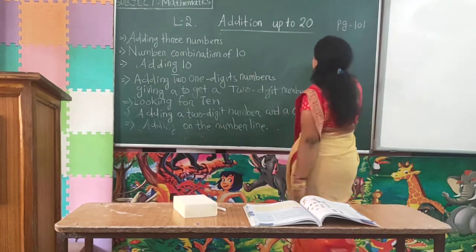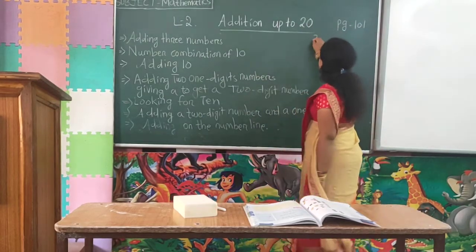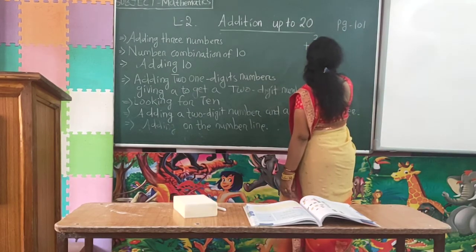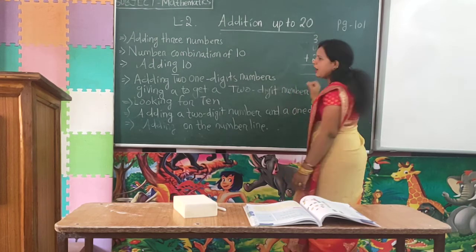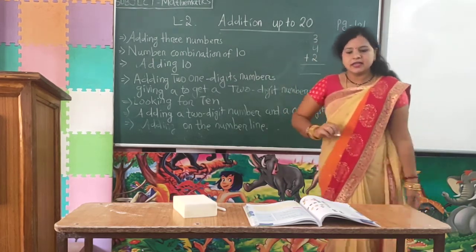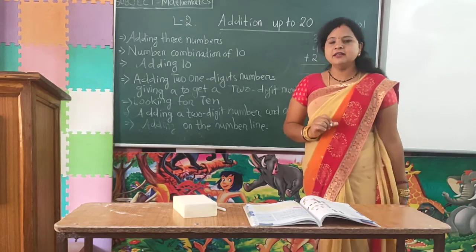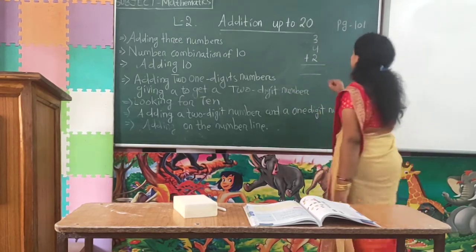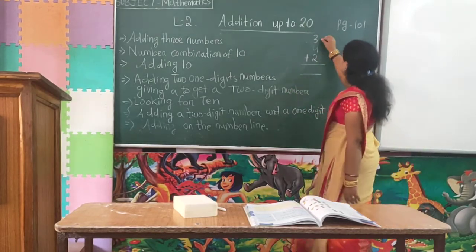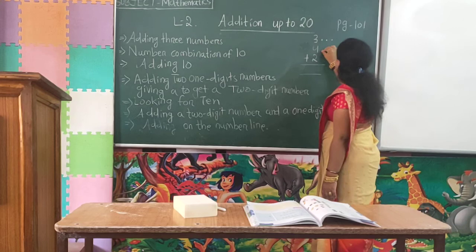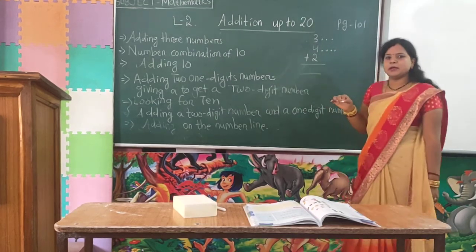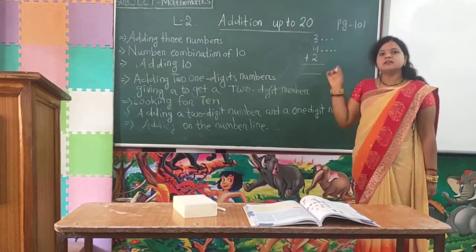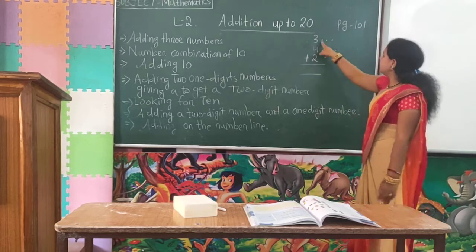For example, we have 3 numbers here: 3 plus 4 plus 2. How will you add these numbers? That I will teach you. So first, we start with 3 — counting 1, 2, 3 — and then 4 — counting 1, 2, 3, 4. First you add these 2 numbers. So 3 plus 4 is how much?